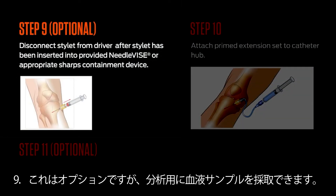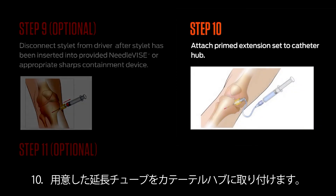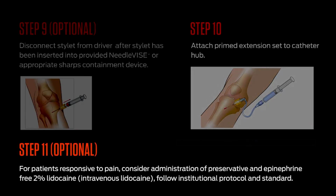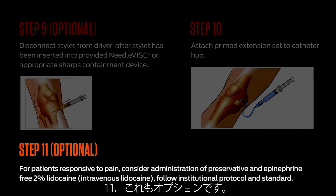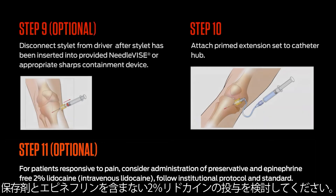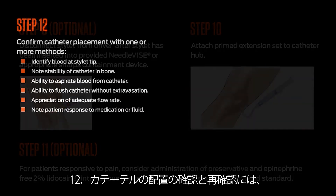Step 9 (optional): Obtain blood samples for laboratory analysis. Step 10: Attach the primed extension set to the catheter hub. Firmly secure by twisting clockwise. Step 11 (optional): For patients responsive to pain, consider the administration of preservative- and epinephrine-free 2% lidocaine.